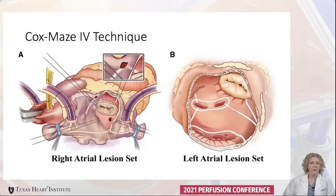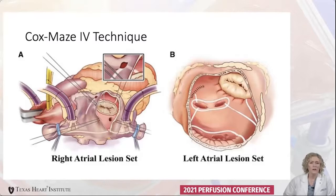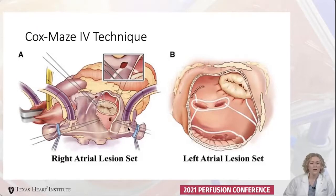This can be performed with sternotomy or minimally invasive through a right mini thoracotomy. We would do bicaval cannulation, use initially normothermic cardiopulmonary bypass, and then use a bipolar clamp to isolate a cuff of left atrial tissue surrounding the right and left pulmonary veins, creating the pulmonary vein isolation lesion lines. Then we can cool the patient to 34 degrees Celsius and perform the right atrial lesions while the heart is still beating without an aortic clamp, then arrest the heart to perform the left atrial lesions. The left atrial appendage is also closed.